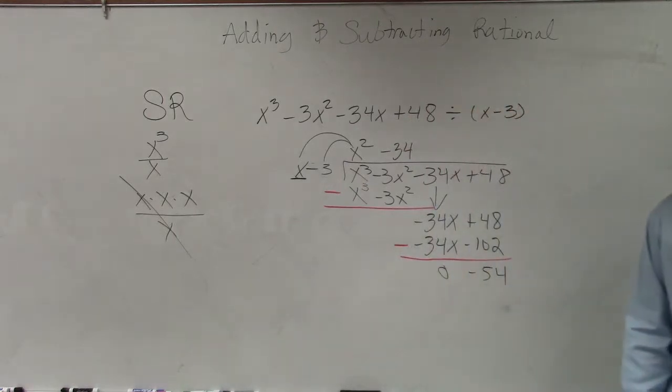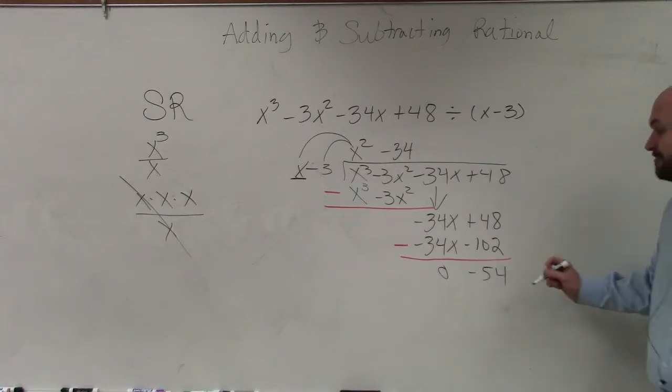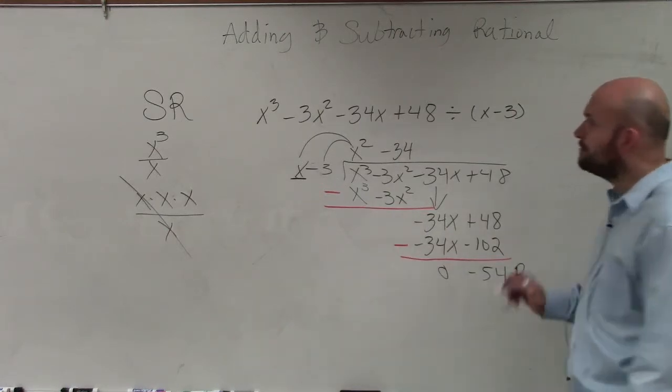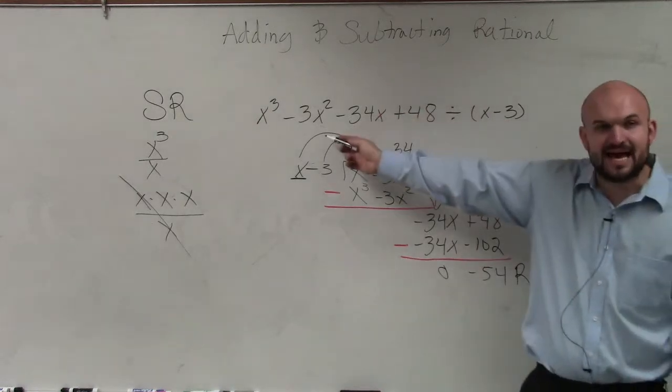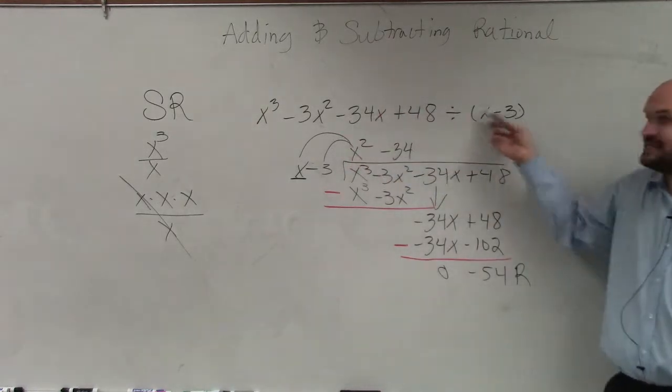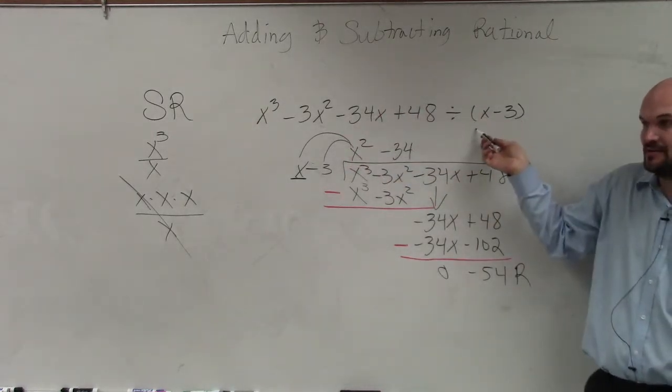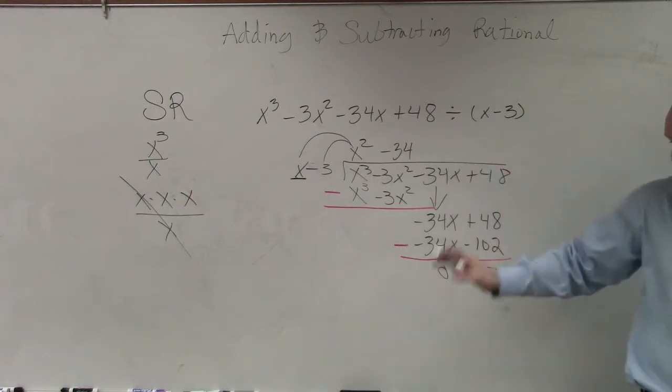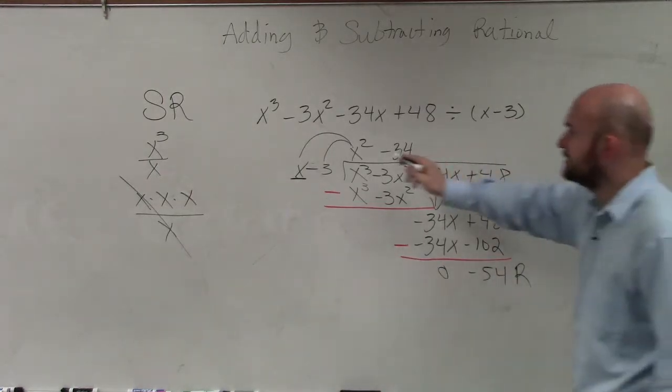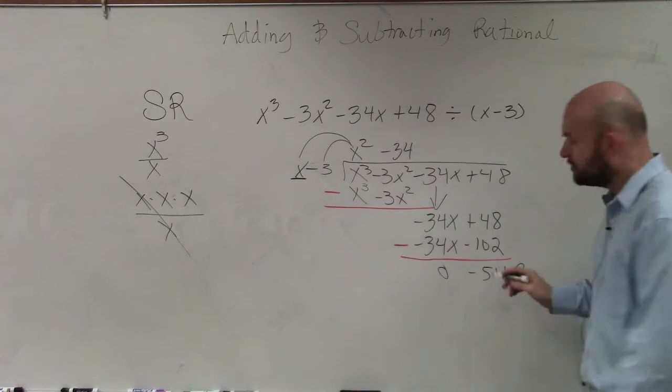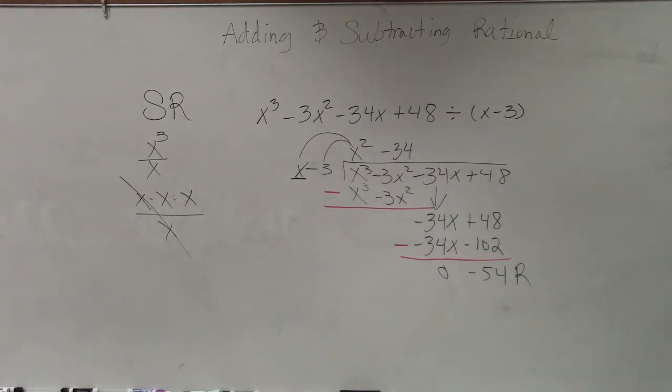Now, what I want you guys to understand here is this is our remainder. So since we have a remainder, does this divide into that? No. Is this a 0, or is this a factor then? No. But that is your final answer. So your final answer is x squared minus 34 plus your remainder, negative 54, is your remainder. Now, that's it. That's your answer.